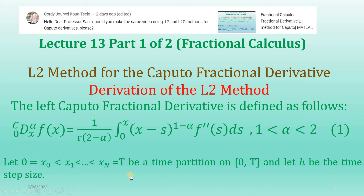Now let's suppose that we have a time partition on the interval 0 to capital T. The initial point is denoted by x0, whose value is 0, and the last data point xn is equal to capital T. We have a total of n plus 1 grid points, and h denotes the time step size.